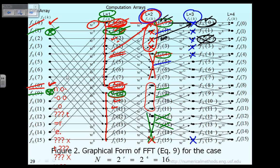Similarly, when we compute F31, we can also compute F33 with very minor difference — instead of adding a product, we subtract it. So for vector F3 in level 3, the pattern is: compute the first two values F30 and F31, skip the next two; then compute F34 and F35, skip the next two; then compute F38 and F39, skip the next two; then compute F312 and F313, and skip the next two.